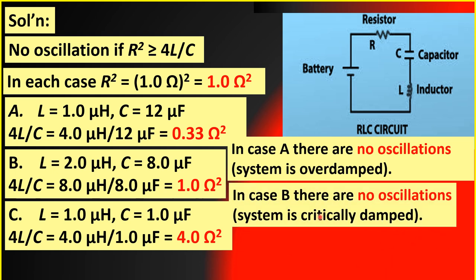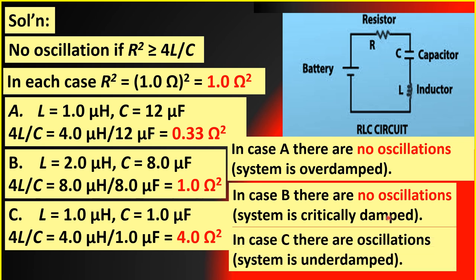In case A, there are no oscillations because R squared, 1.0 ohm squared, is greater than 0.33 ohm squared — this is an overdamped system. In case B, still no oscillations because R squared, 1.0 ohm squared, equals the 4L over C value of 1.0 ohm squared — this is critically damped. In letter C, there are oscillations because R squared, 1.0 ohm squared, is less than 4L over C, 4.0 ohm squared — this is an underdamped system.